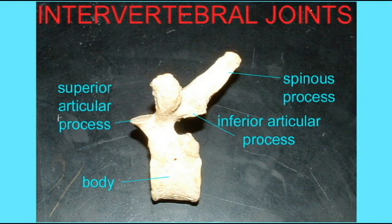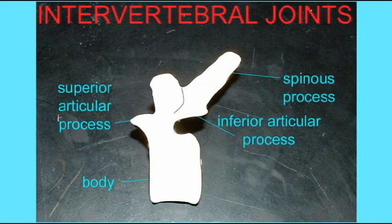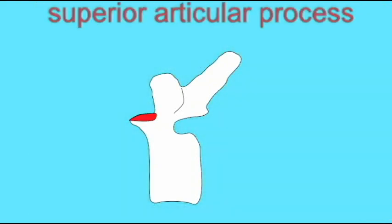If we consider two vertebrae, they articulate at three separate points. The inferior vertebra possesses two superior articular processes, which articulate with the two inferior articular processes of the vertebra which is superior to it.